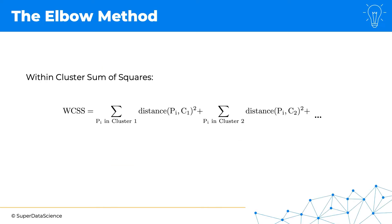So the elbow method requires us to look at this equation for the within-cluster sum of squares, or the WCSS. Don't worry if it looks a bit complex at first. It's actually very simple. It basically looks at the distance between each point and the centroid of its cluster, and you square that distance. So let's have a look at this in an example.